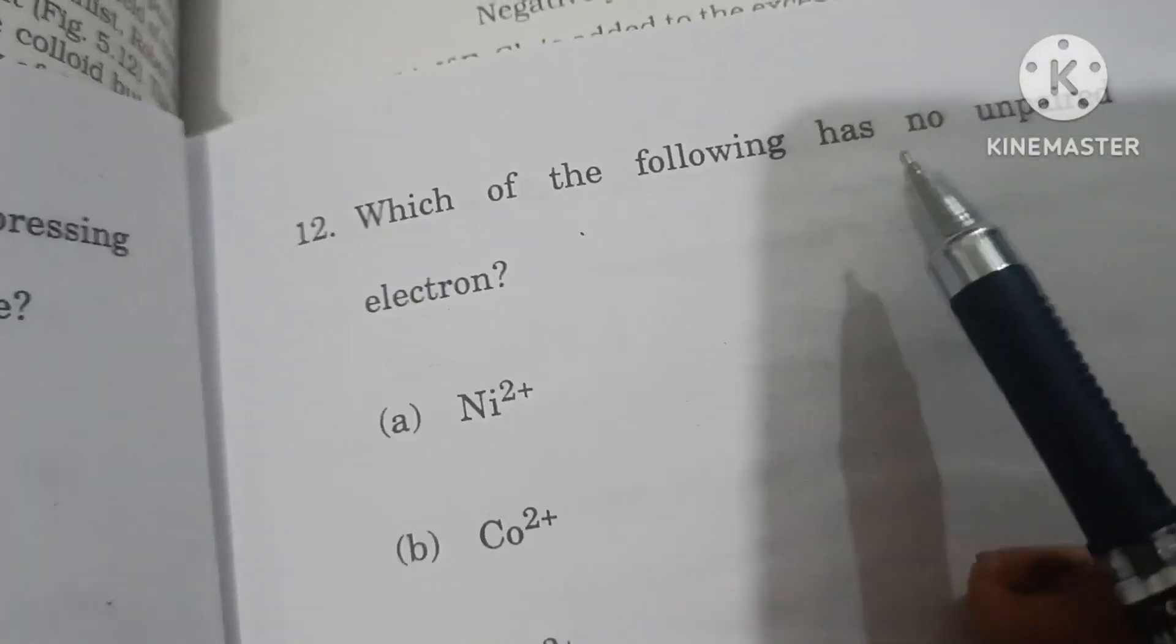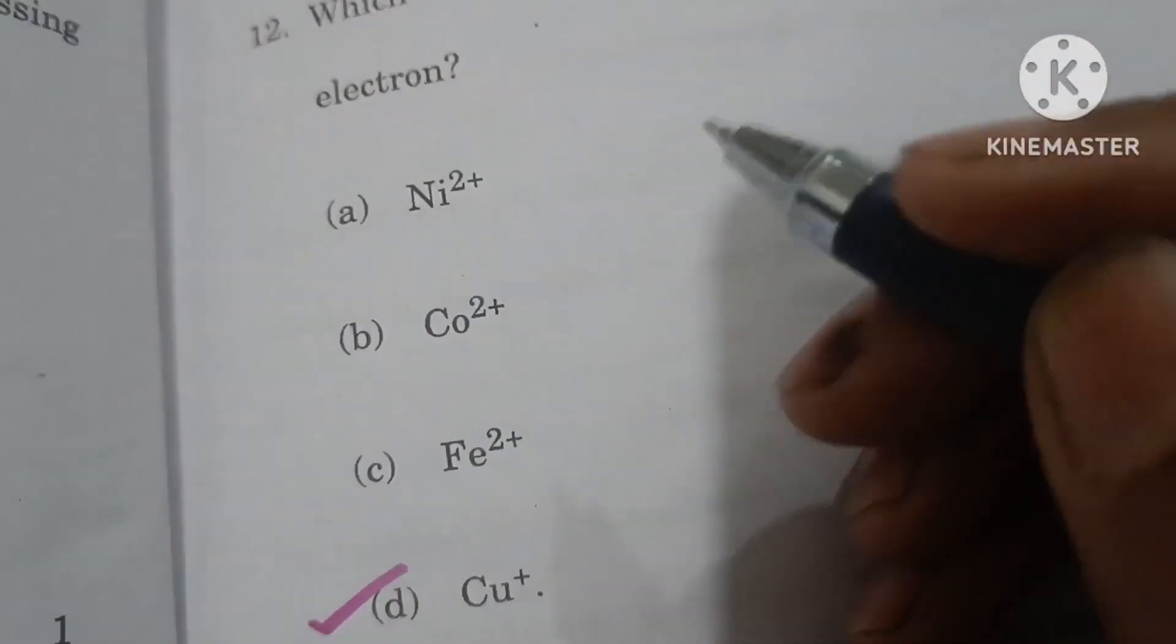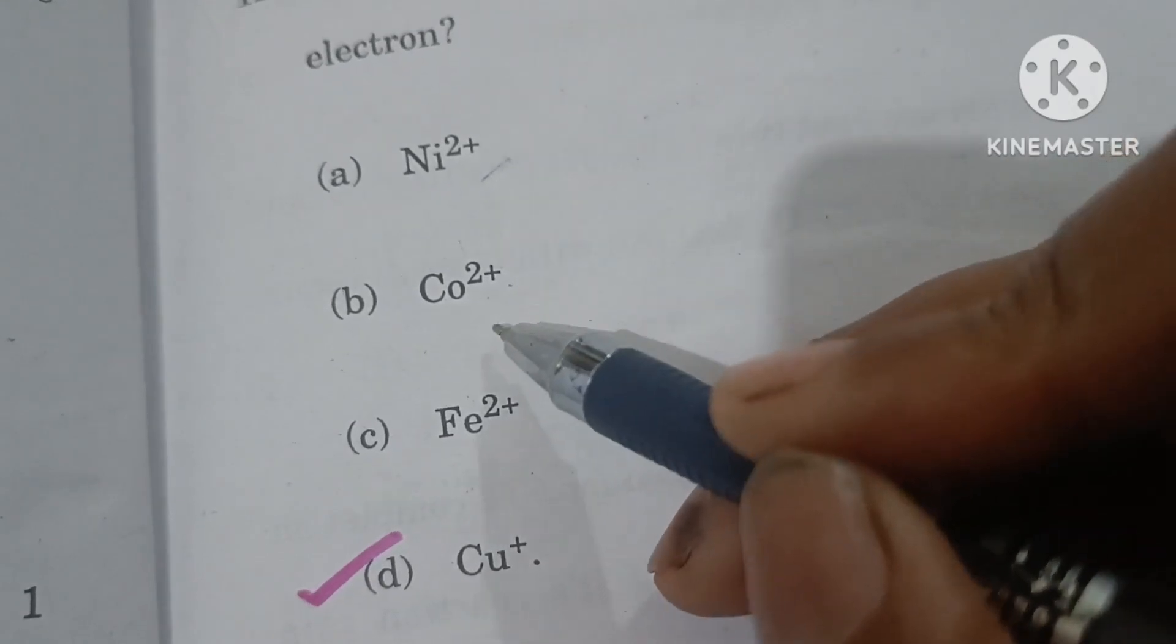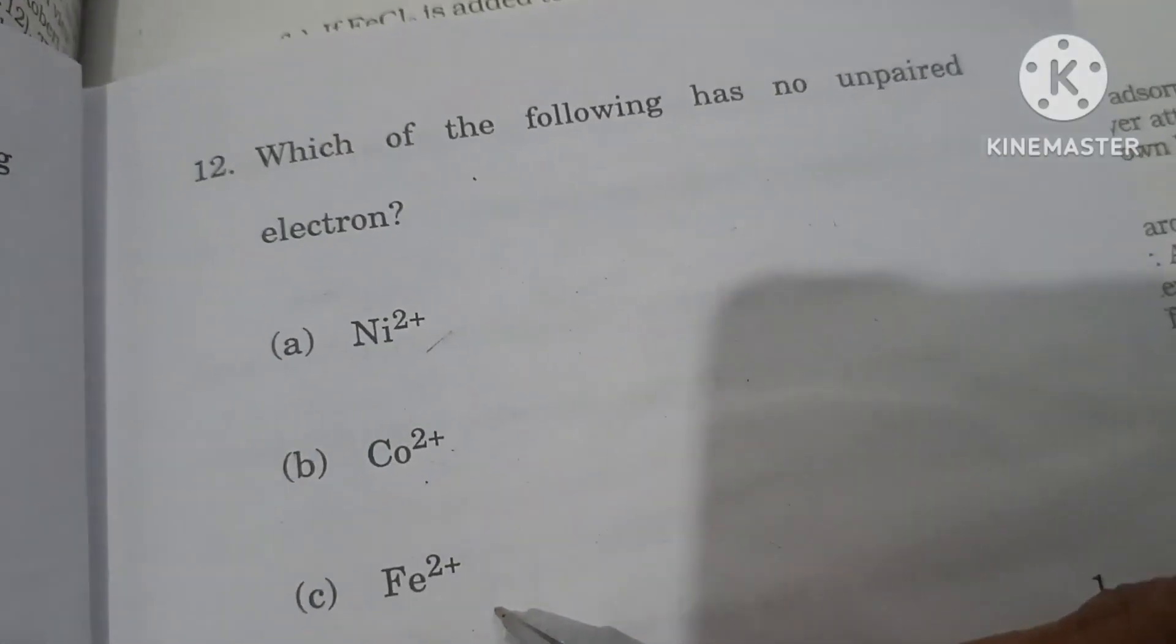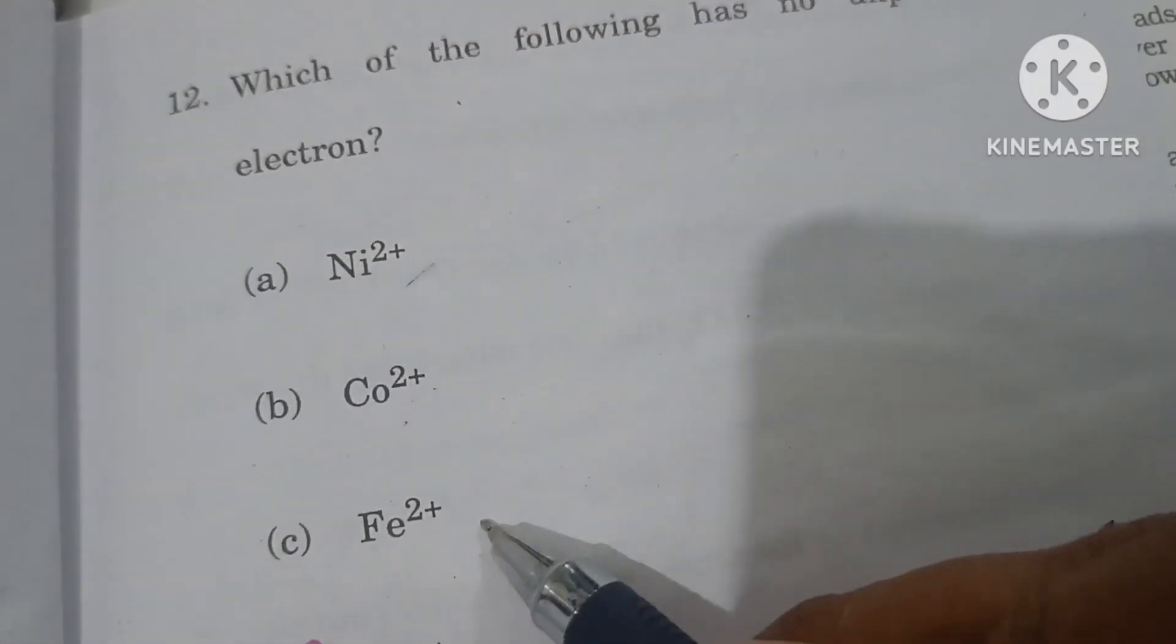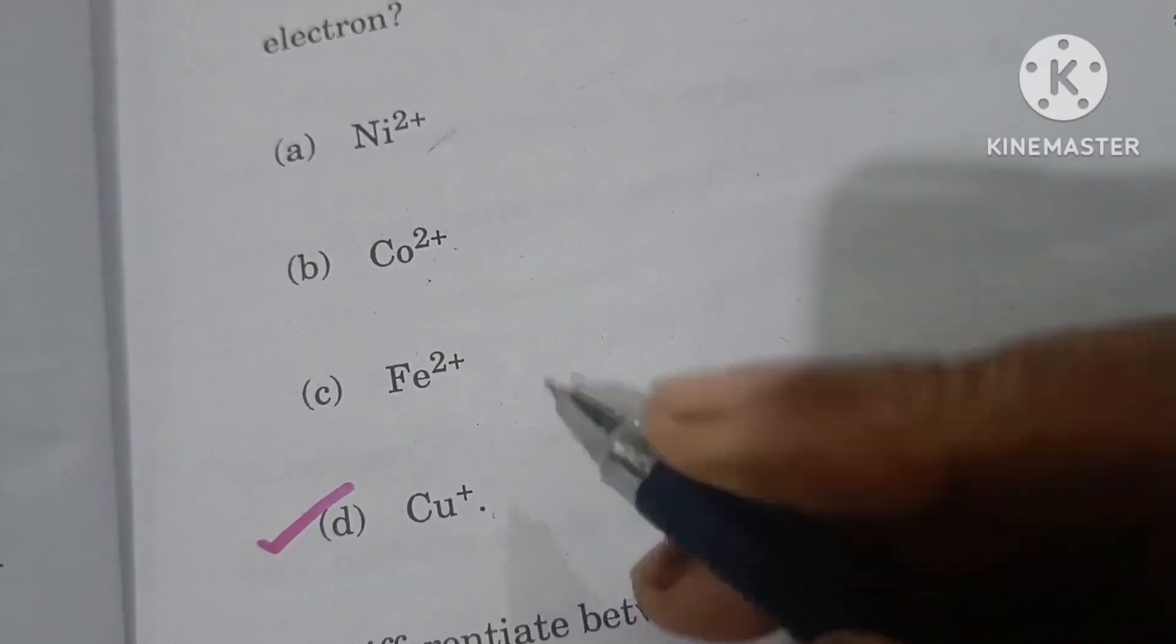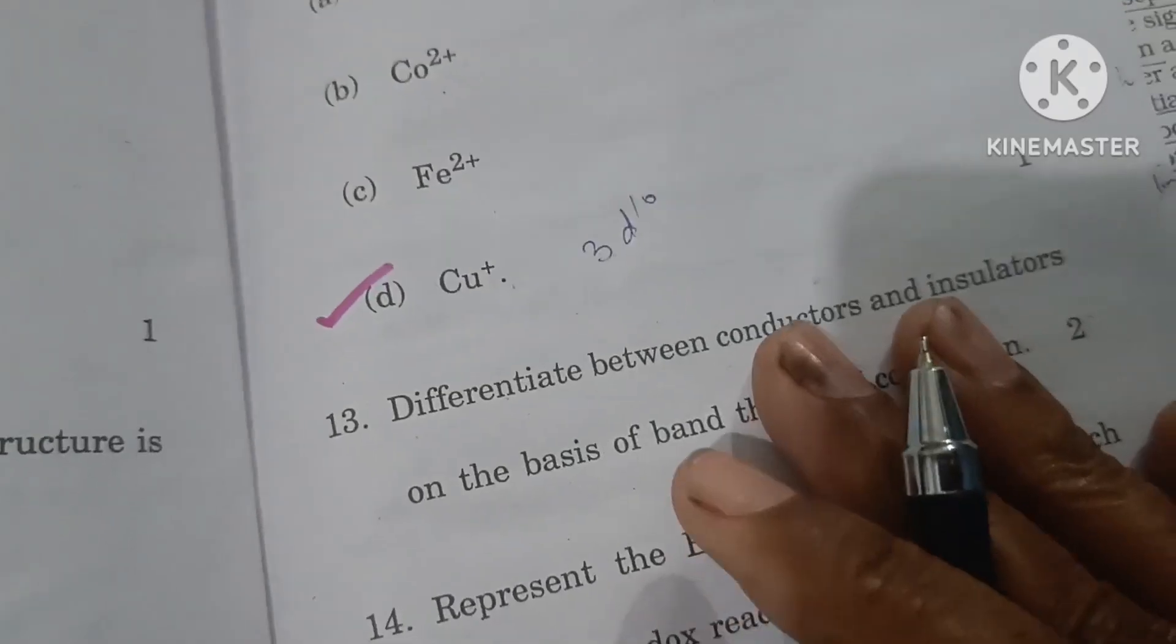Which of the following has no unpaired electron? Nickel has 3d8 configuration. Cobalt 2+ has 3d7. Fe 2+ has four unpaired electrons. Cu+ has 3d10, so it has no unpaired electron.